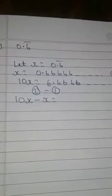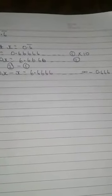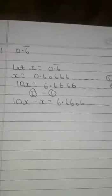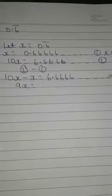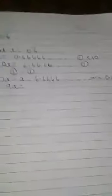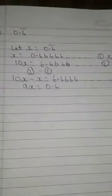So 10x minus x... We will subtract 6.666 up to infinity minus 0.666 up to infinity. So 10x minus x equals 9x. And when we subtract, the answer is 6.